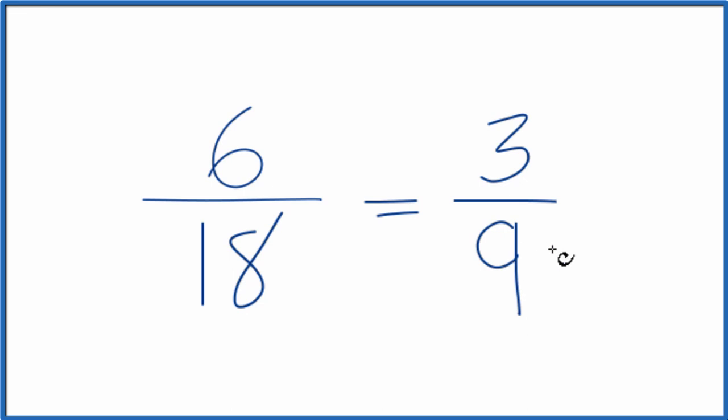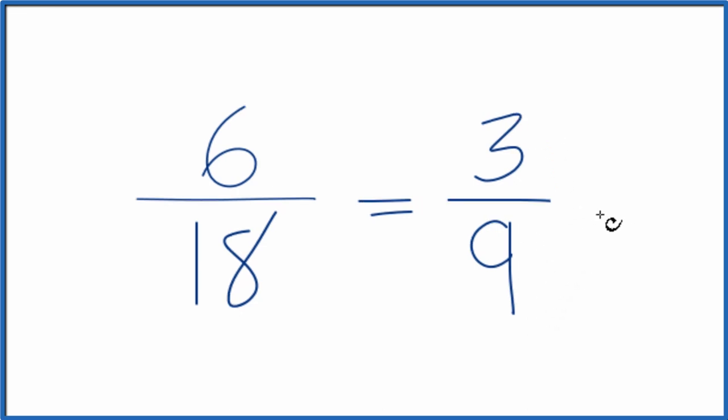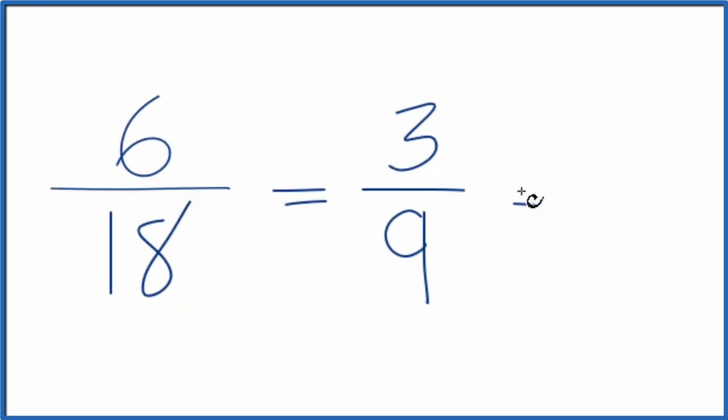We can even simplify this further. So 3 9ths, if we divide 3 by 3, that's 1. If we divide 9 by 3, that's 3. So we simplify it further to 1 3rd, and that is another equivalent fraction for 6 18ths.